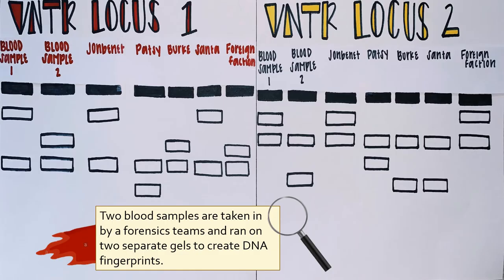Two blood samples from JonBenet's clothes and the floor were observed using two different VNTR loci. The DNA fingerprints created by the gel electrophoresis are shown here. These samples were compared to both JonBenet's DNA and all four of her potential killers.